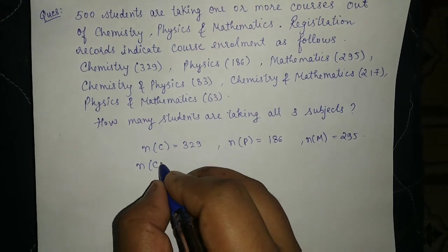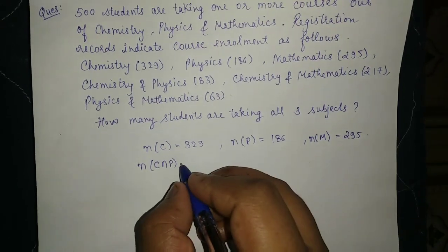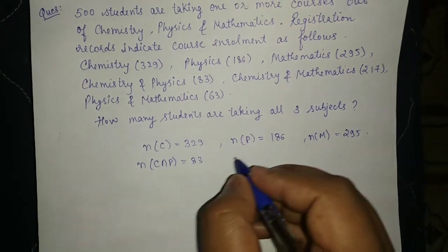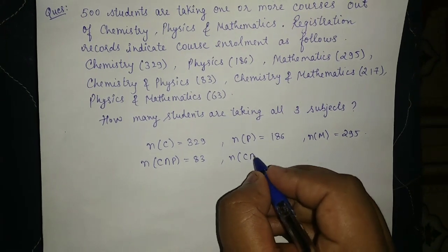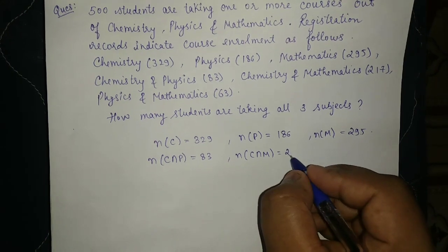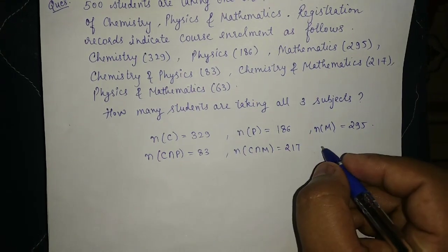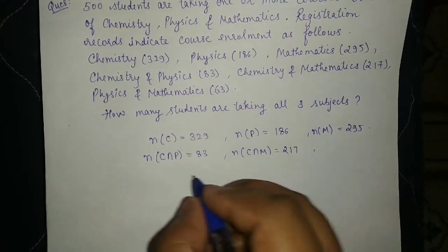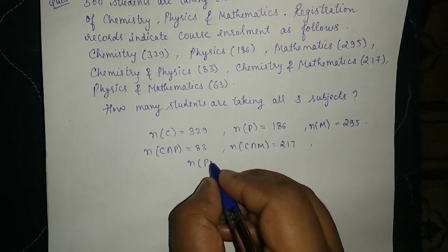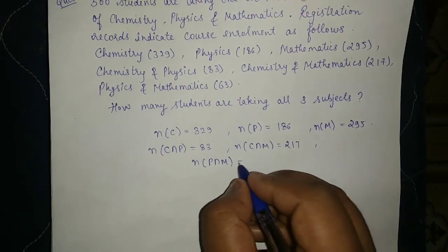Chemistry and physics both 83, chemistry and maths 217, and physics and mathematics is 63.